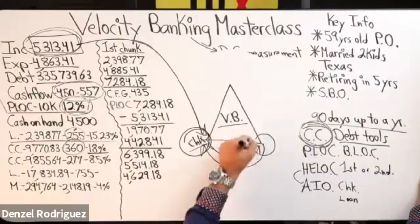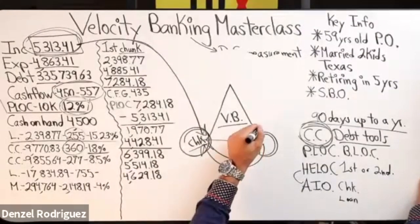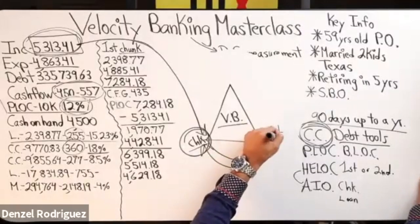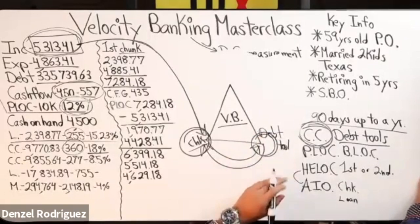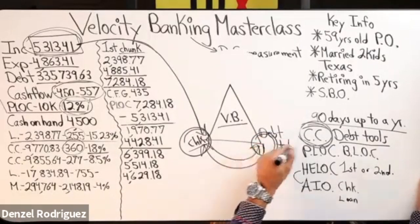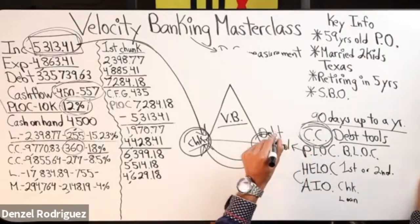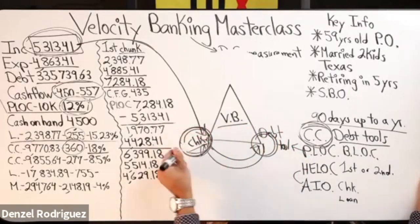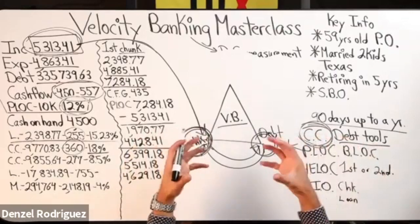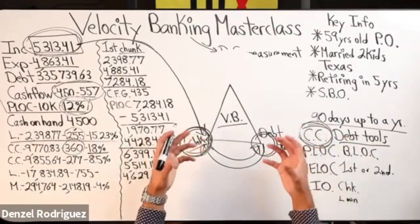Over on this side of the triangle is our debt tool - whatever we're using: credit card, P-LOC, HELOC, all-in-one loan, whatever it is. Let's say it's a P-LOC in this situation. The P-LOC is at the same institution, the same bank where your checking account is at. This is preferable, this is convenient, this works great.